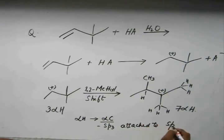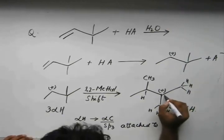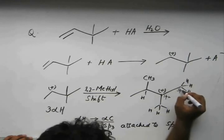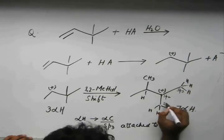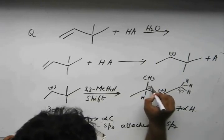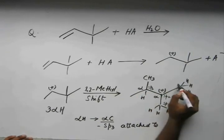Now what is an alpha carbon? Alpha carbon is that sp3 hybridized carbon that is attached to an sp2 hybridized carbon. So here was the sp2 hybridized carbon and I had this sp3 hybridized carbon over here, one sp3 hybridized carbon over here and one sp3 hybridized carbon over here. So these are my three alpha carbons.